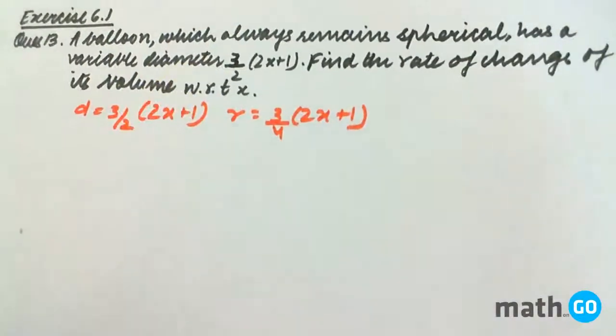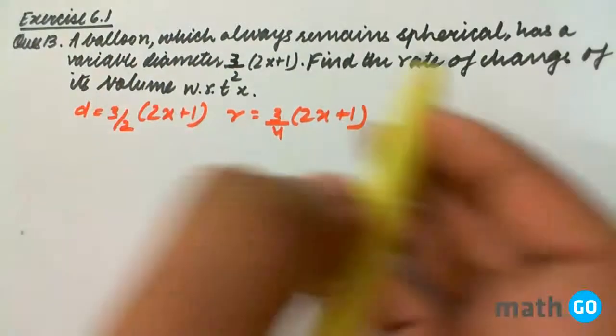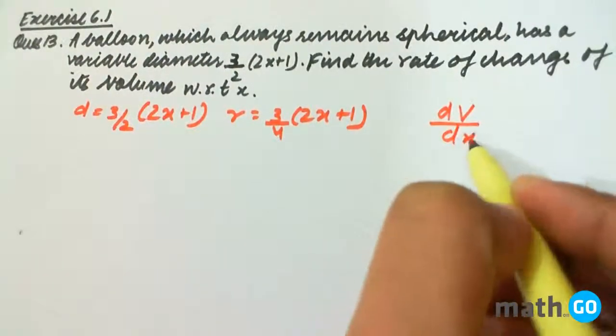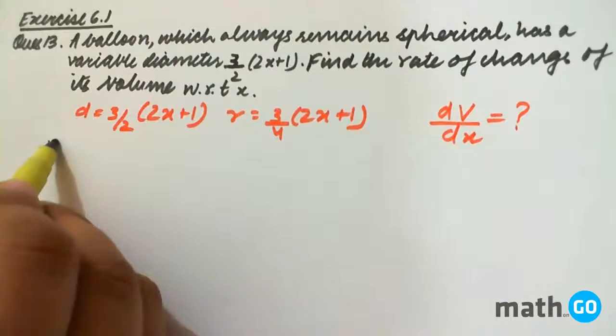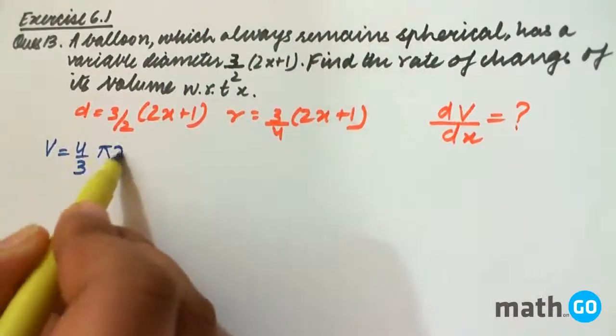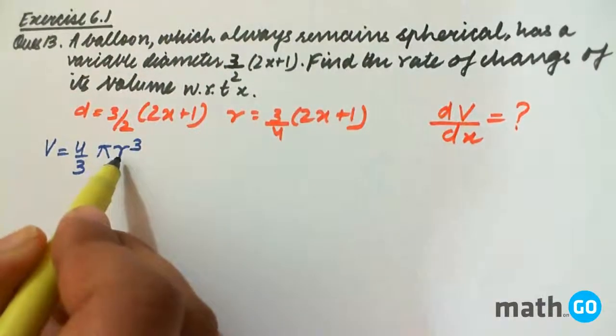Find the rate of change of its volume. We have to find dV/dx with respect to x. We know that volume equals 4/3 π r³, where r is the radius of the sphere.